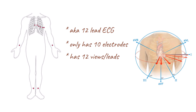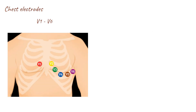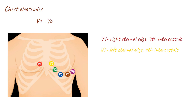The 10 electrodes comprise 4 limb electrodes and 6 chest electrodes. The chest electrodes are named V1 to V6 and are placed as follows. V1 is placed at the right sternal edge at the 4th intercostal space. V2 is placed at the left sternal edge, 4th intercostal space.